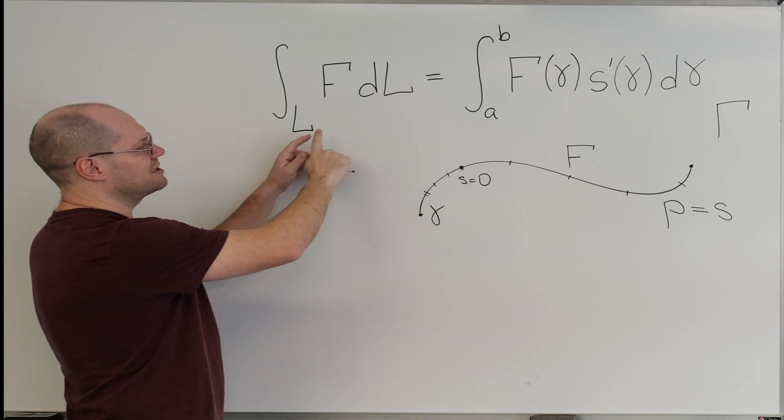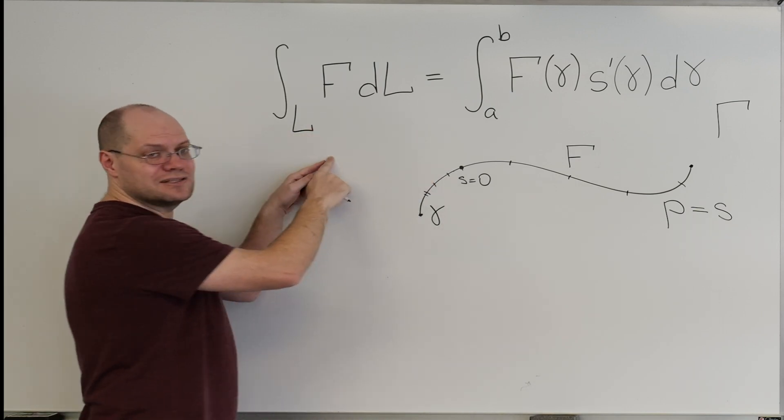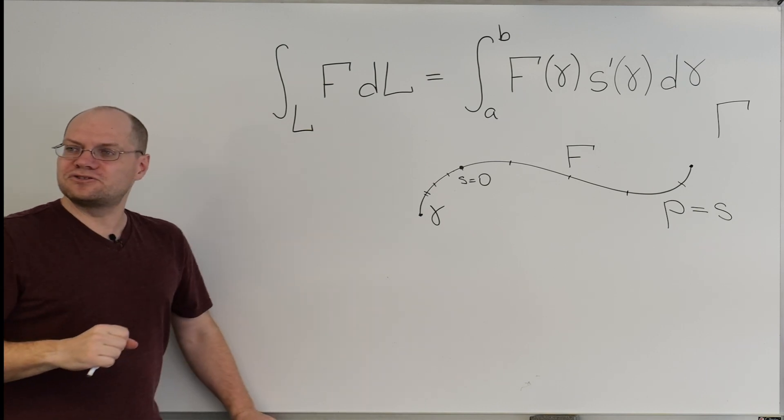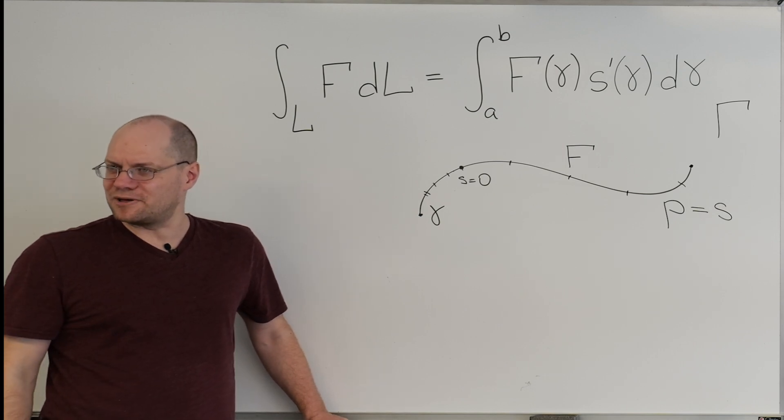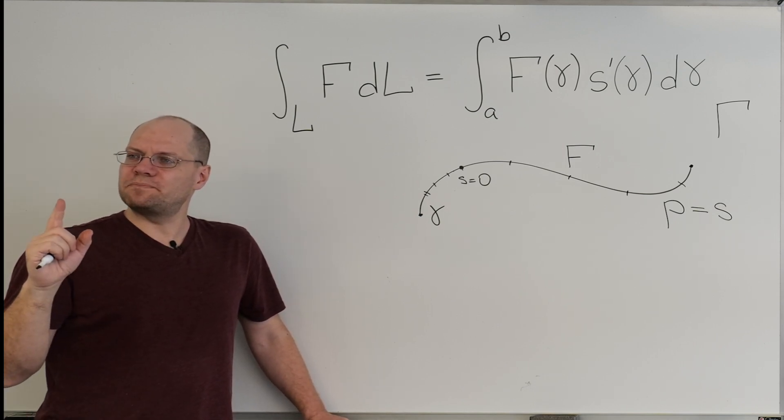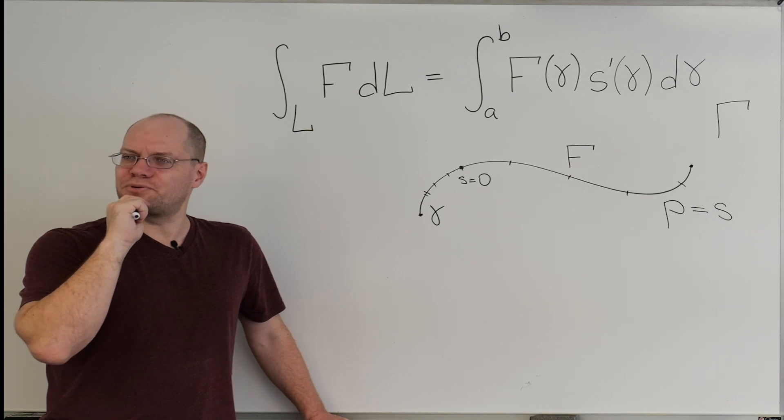So, partially, almost a complete success. So why does it correspond to this? Well, let me, so we'll already know that the value of the integral does not depend on the parameter. So let me choose one particular parameter.